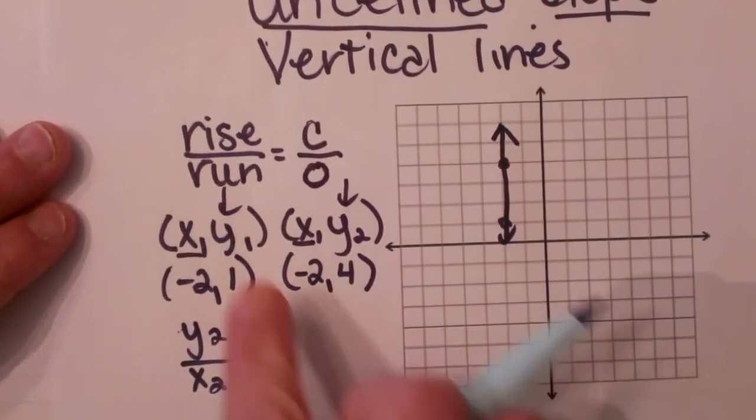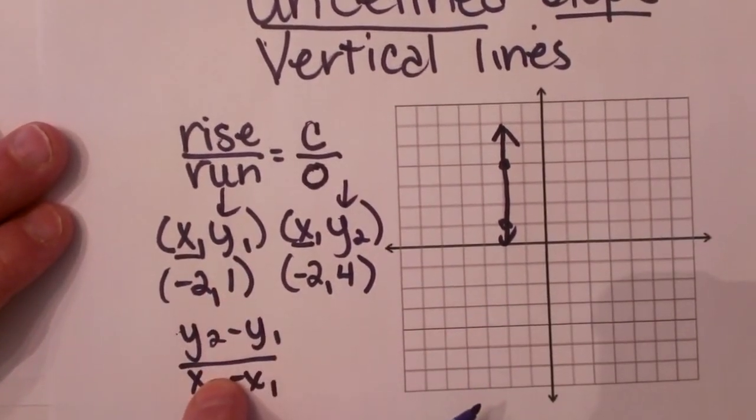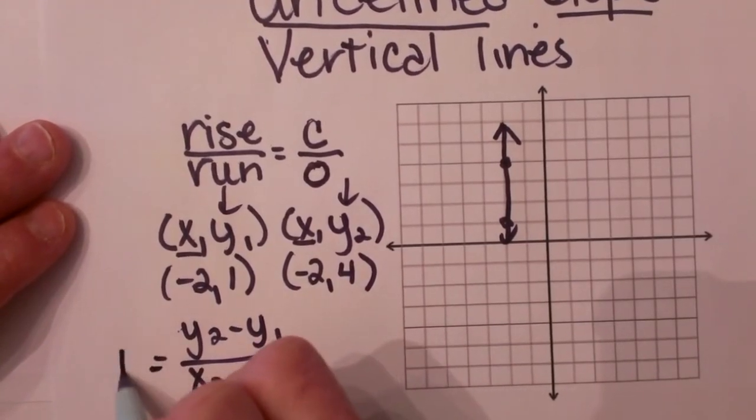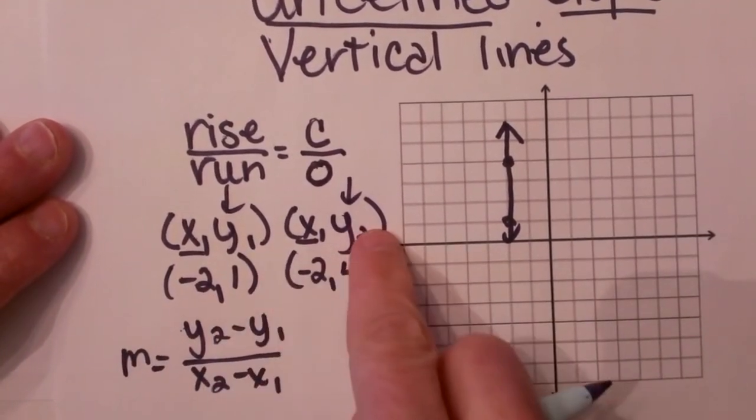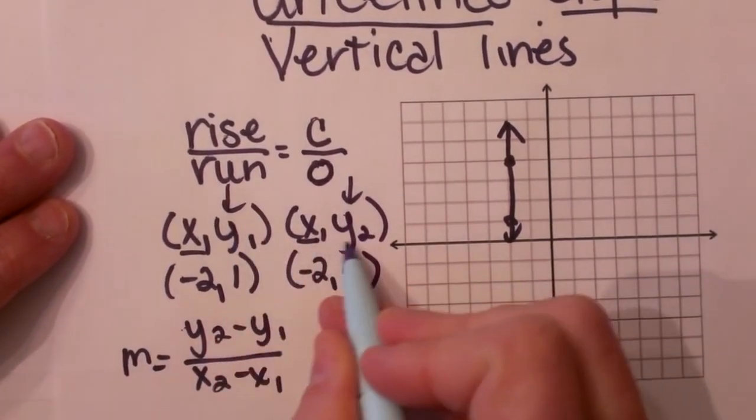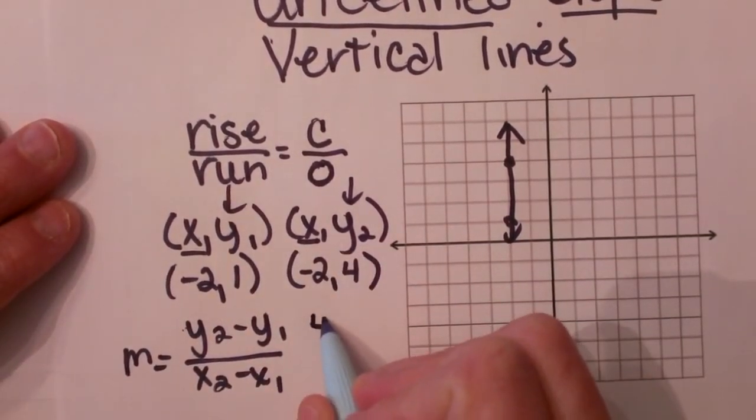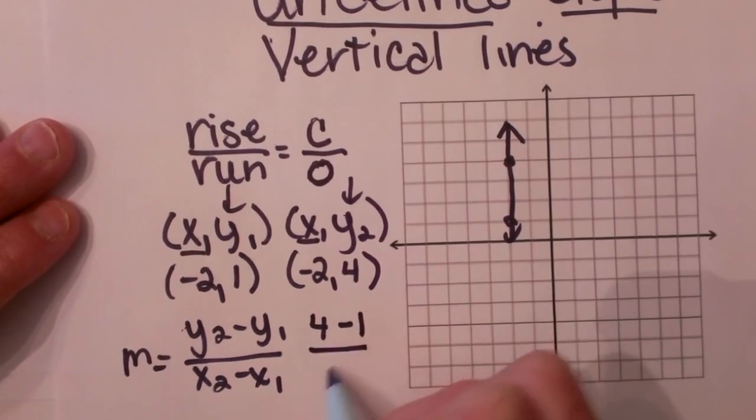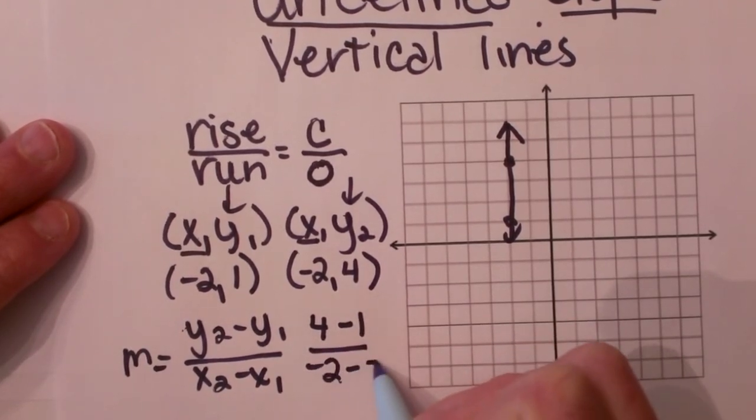Now remember where am I getting this? I am getting this from the slope formula. Remember slope is our difference in our y's over the difference in our x's. So if I plug it into the slope formula, I am going to get 4 minus 1 over negative 2 minus negative 2.